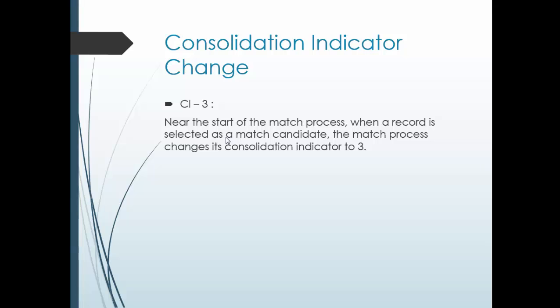Consolidation indicator value 3: at the very start of the match process, when a record is selected as a match candidate, the match process changes its consolidation indicator to 3. So when we just start the match process, the selected candidate acts as a match candidate and during the match process the consolidation indicator changes from 4 to 3.